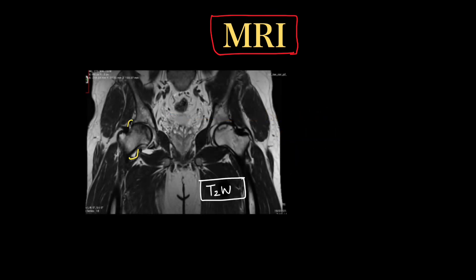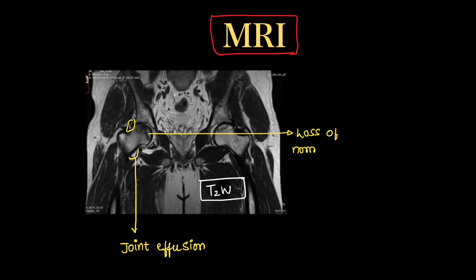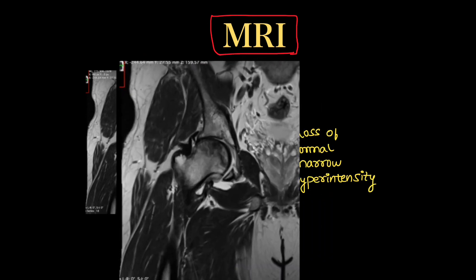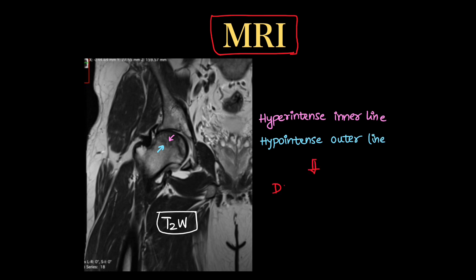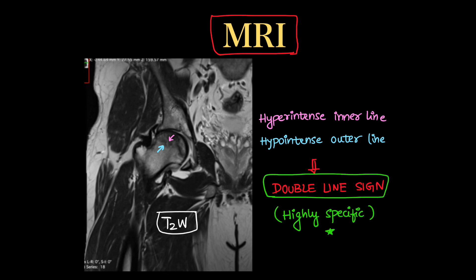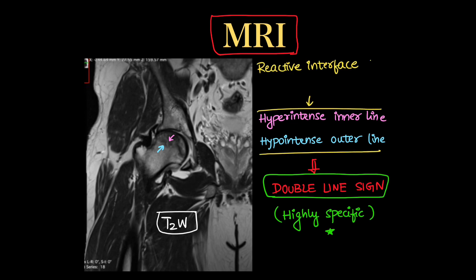On T2-weighted images, joint effusion around the head and neck of the involved hip can be seen, along with loss of normal marrow hyperintensity signifying edema. The most important finding is the double line sign: a hyperintense inner band along a hypointense outer line on T2-weighted imaging. This is highly specific for avascular necrosis of the hip and signifies the reactive interface separating non-viable bone from viable bone.